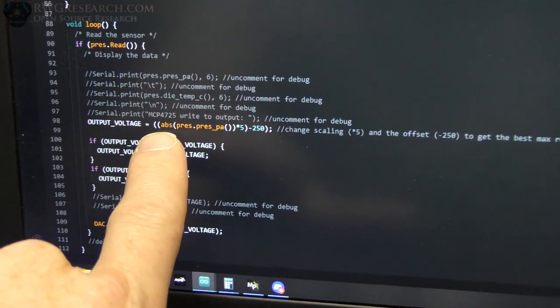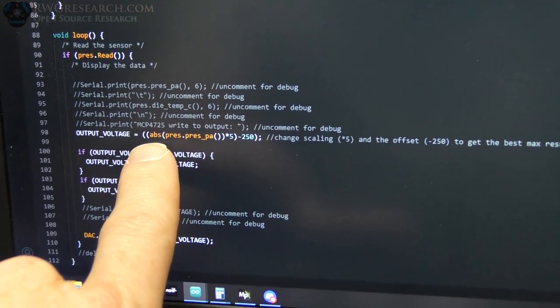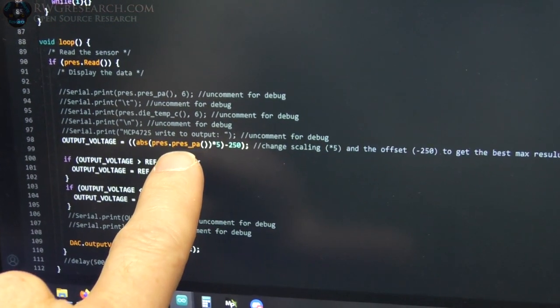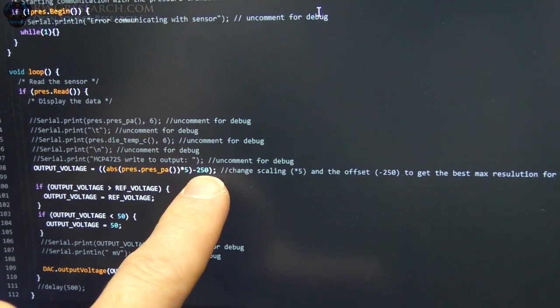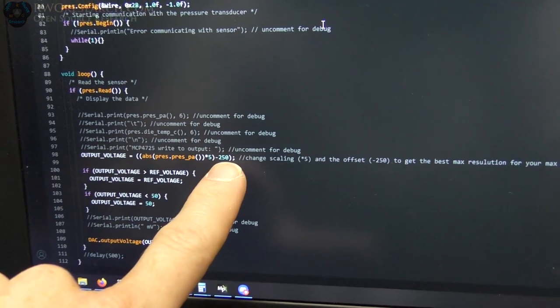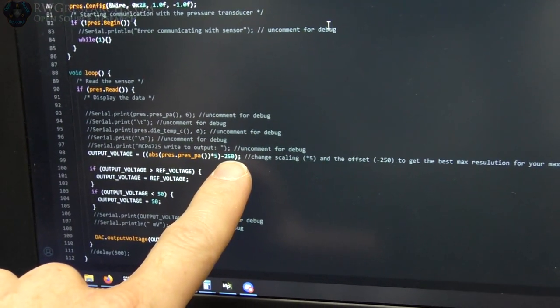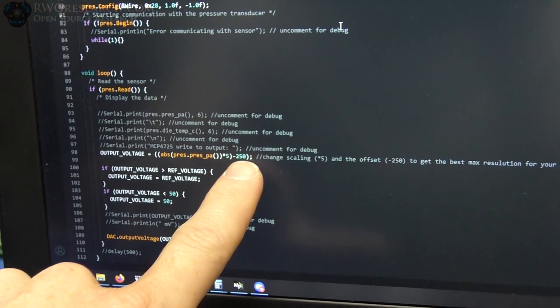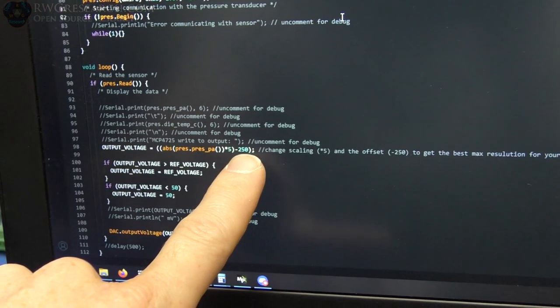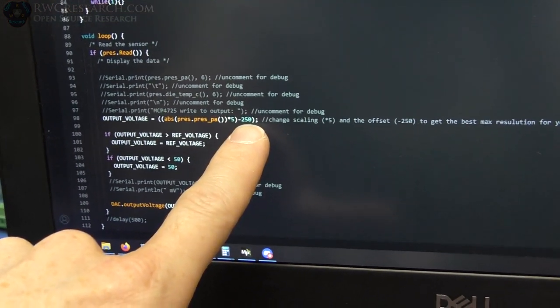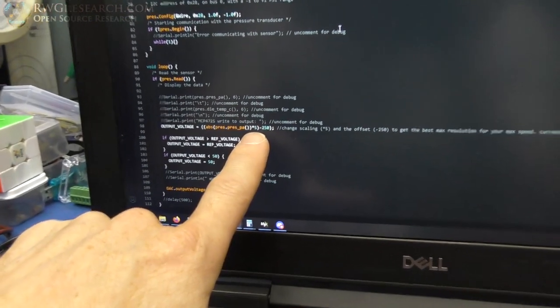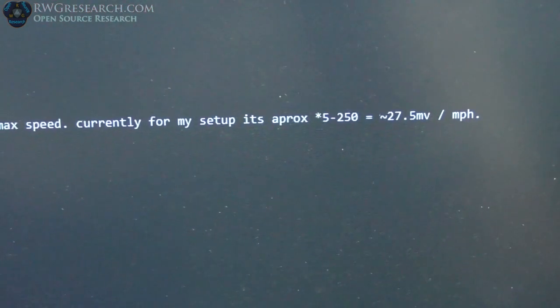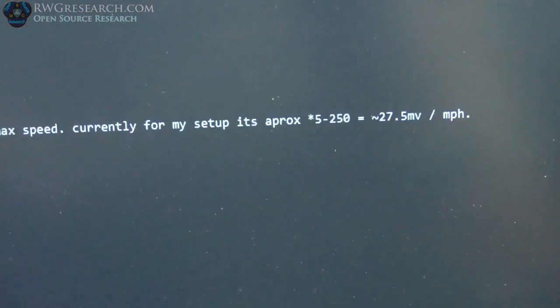So absolute, because sometimes it's a negative number, so we want to take the absolute pressure, we're going to multiply it by 5, and we're going to subtract some offset. So the offset's actually, I believe a, what is it, half a volt at this point. And we subtracted 250, so we get 250. So we're just scaling this thing out, and this scales out perfectly to be about 27.5 millivolt per mile an hour.